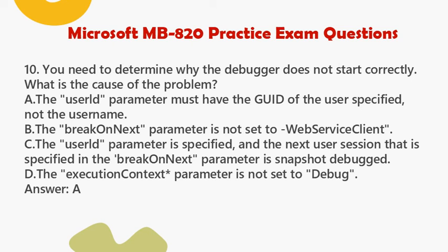A. The userId parameter must have the GUID of the user specified, not the username. B. The breakOnNext parameter is not set to WebServiceClient. C. The userId parameter is specified, and the next user session that is specified in the breakOnNext parameter is snapshot debugged. D. The executionContext asterisk parameter is not set to Debug.